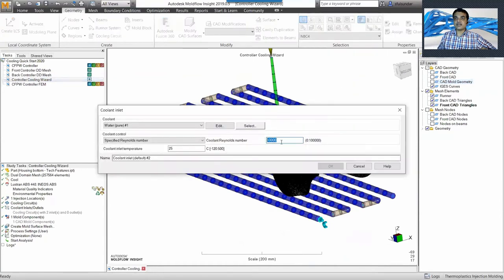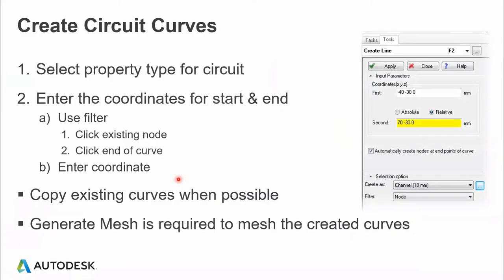By default it assigns a Reynolds number of 10,000 for turbulence, a coolant temperature of 25 degrees, and uses pure water as the coolant. Now, when creating customized cooling circuits — for example to extend cooling regions in the core, or to create baffles or bubblers — there are multiple ways. One way is by creating circuits using curves. You click the existing nodes, click the end of the curve, and enter coordinates. There's an option for a relative tube — relative to the first selected node — or you can use absolute global coordinates.